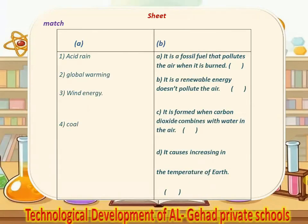Okay, match. Acid rain: it forms when carbon dioxide combines with water in the air. Number 2, global warming: it causes an increase in the temperature of the earth. Number 3, wind energy: it's a renewable energy and it doesn't pollute the air. Number 4, coal: it's a fossil fuel that pollutes the air when it's burned.